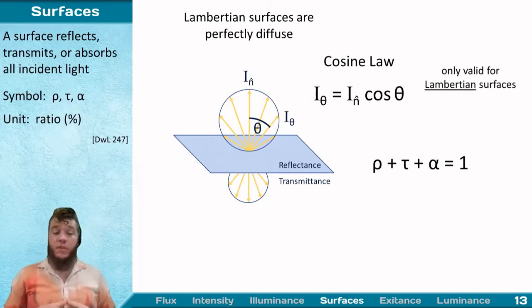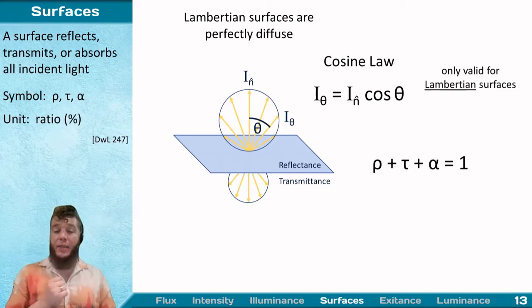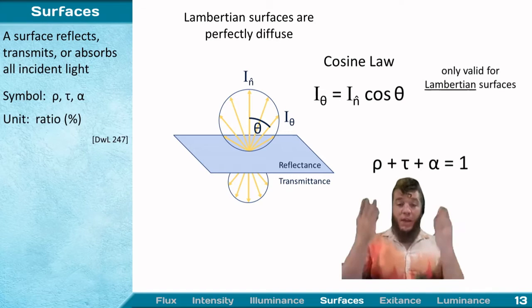There are three core ways light interacts with a surface: it is either reflected, transmitted through, or absorbed by that surface. For normal surfaces, rho plus tau plus alpha always equals one.